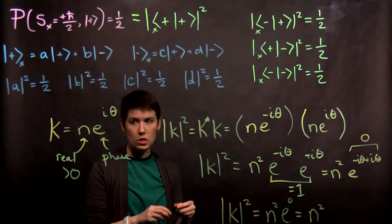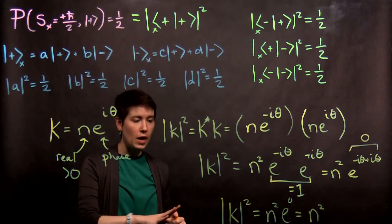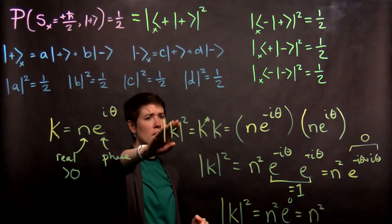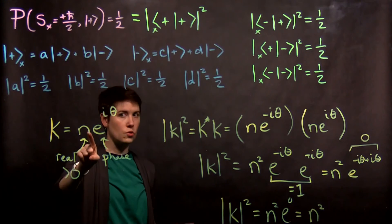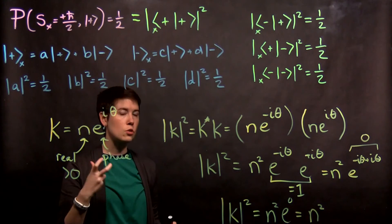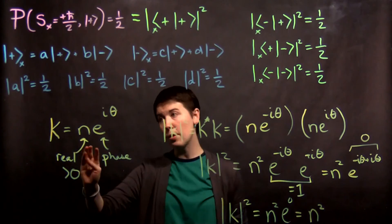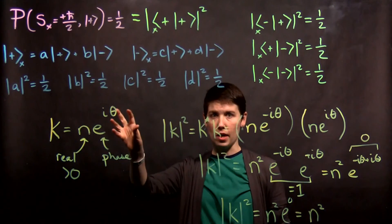So the reason I've worked through this is to show you that in fact, if we know that k squared equals n squared, that doesn't tell you that k is just equal to n. We actually need to write it in general as a complex number as this real n with this phase.